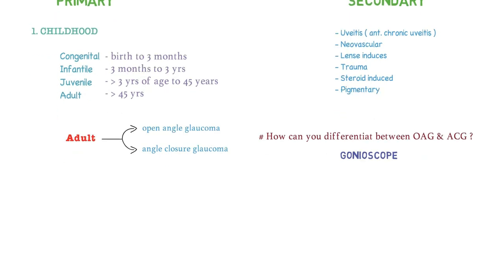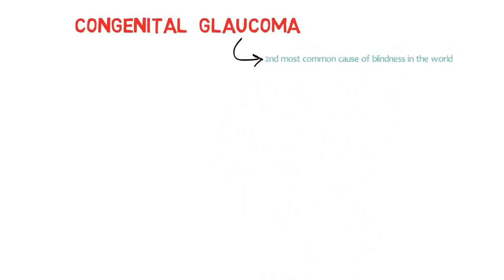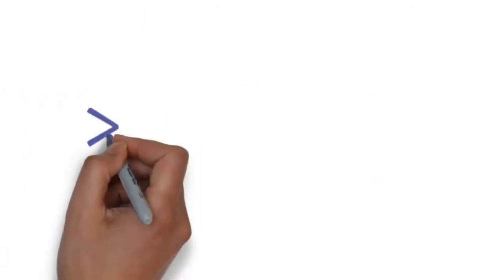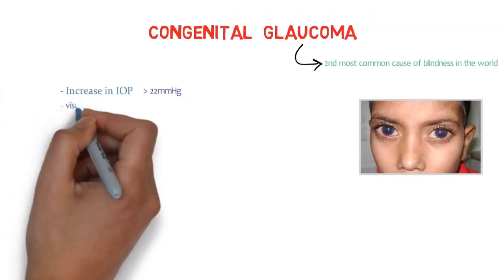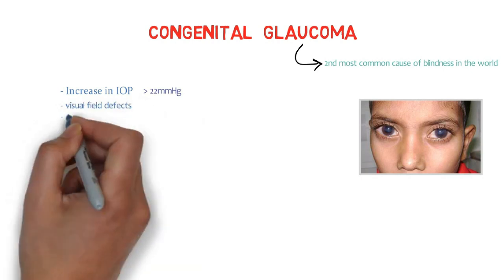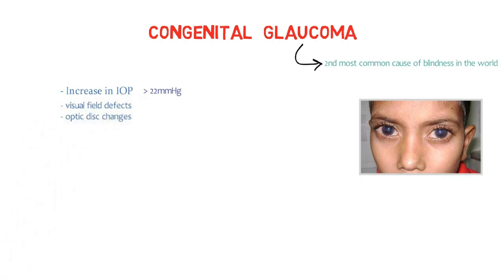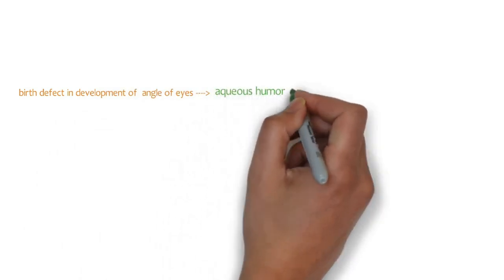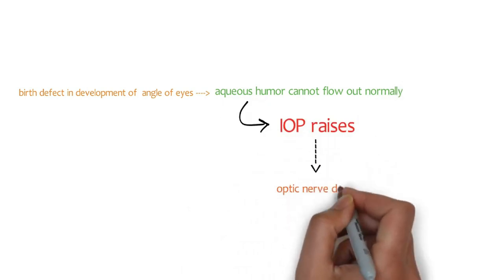In congenital glaucoma, the intraocular pressure rises because there is a birth defect in the development of the angle of the eye. As a result of poor development, there is obstruction in the flow of aqueous humor, so the aqueous humor cannot flow out normally. That's why there is a rise in intraocular pressure, which leads to optic nerve damage. The triad — raised IOP, visual field defects, and optic disc changes — applies here as well.